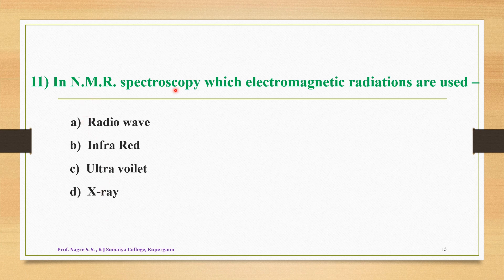Question 11: In NMR spectroscopy, which electromagnetic radiations are used? Options: A — radio waves, B — infrared, C — ultraviolet, D — X-ray. The correct answer is option A — in NMR spectroscopy, radio waves are used.